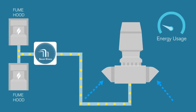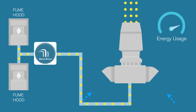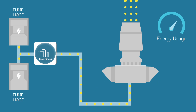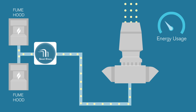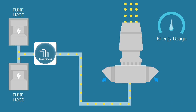For exhaust systems that have a bypass air damper but don't use bypass air, SmartStack combined with lab flow reduction energy conservation measures can drive significant energy savings. The lab flow energy conservation measure lowers the air change rate in the lab, saving energy. When SmartStack detects contaminants as a result of lab activity, it sends a signal to your fans to speed up to full dilution while adding bypass air.